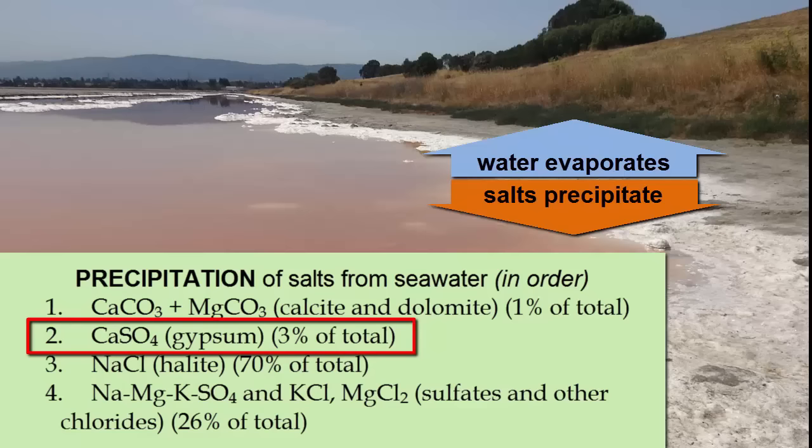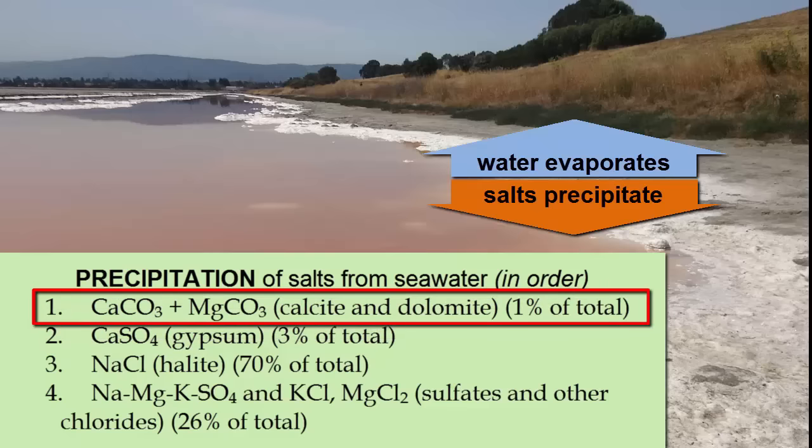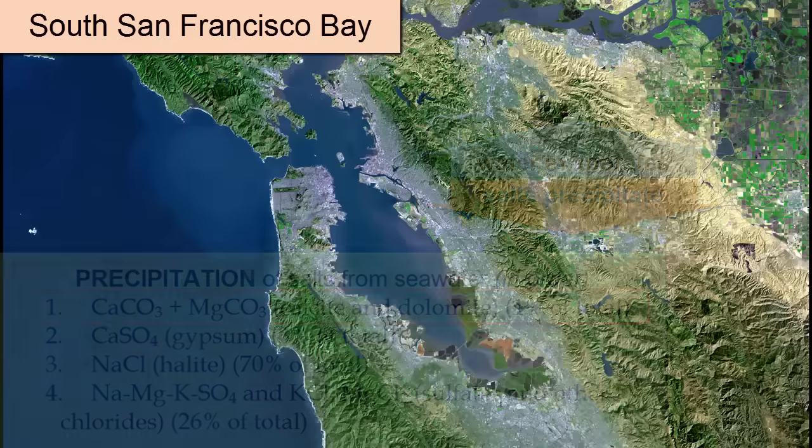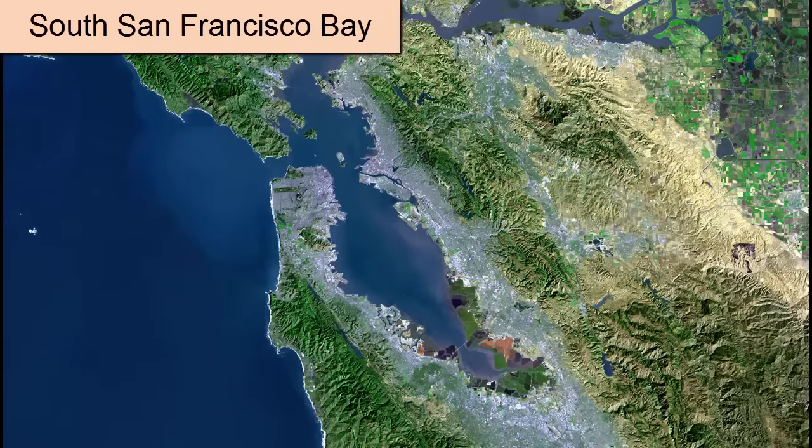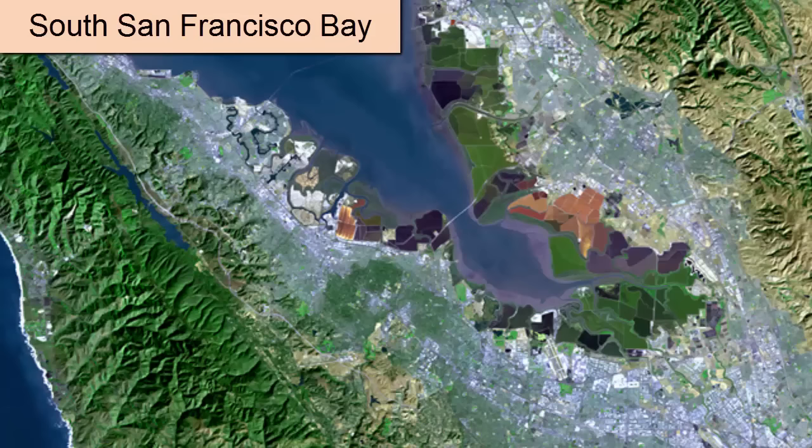Gypsum, a calcium sulfate, is an important product to mine for its use in making drywall. And calcium and magnesium carbonates are important ingredients in cement. Again, these salts are all mined in South San Francisco Bay. You can see the colored evaporation ponds that were created by the corporations that first used the South Bay for this purpose. The colors come from bacteria that live in these ponds.